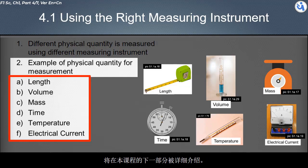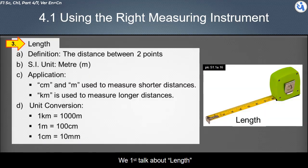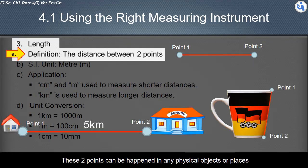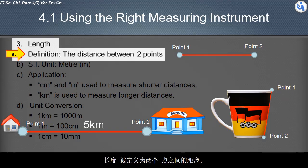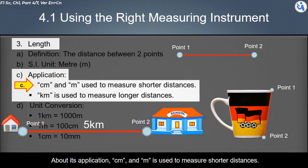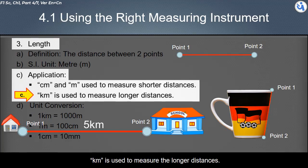We first talk about length. Length is defined as the distance between two points. These two points can be happened in any physical objects or places. The SI unit for physical quantity length is meter, with symbol M. About its application, CM and M is used to measure shorter distances. KM is used to measure the longer distances.